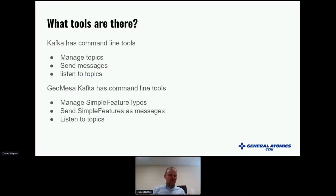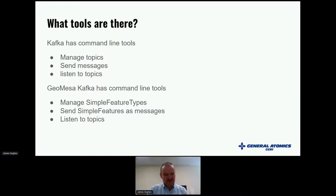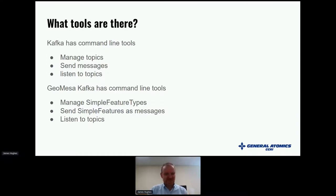GeoMesa's Kafka integration has command line tools that mirror the standard Kafka tools — managing topics, sending sample messages, and listening to what's being sent. For every Kafka topic, we send data of one simple feature type. The tools also help us convert data using the converter library, turning JSON or XML into simple features and sending them to Kafka. There's also a listen command that subscribes to a topic and prints data in human-readable form.